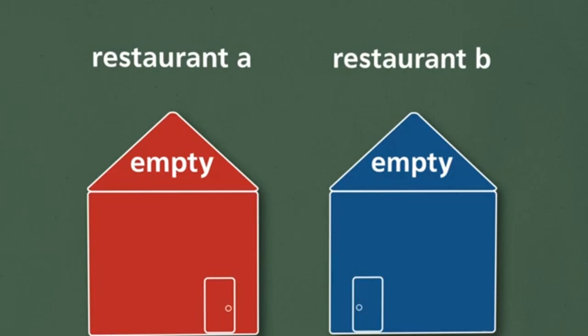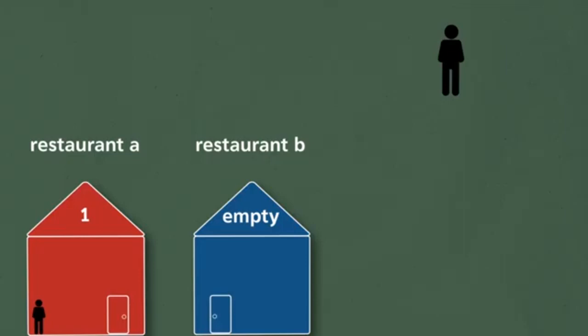The second customer sees one person eating at restaurant A and an empty restaurant B. She makes her choice based on two things. First, the appearance of each restaurant. That's her own information. And secondly, the fact that the first customer chose restaurant A. That's external information.